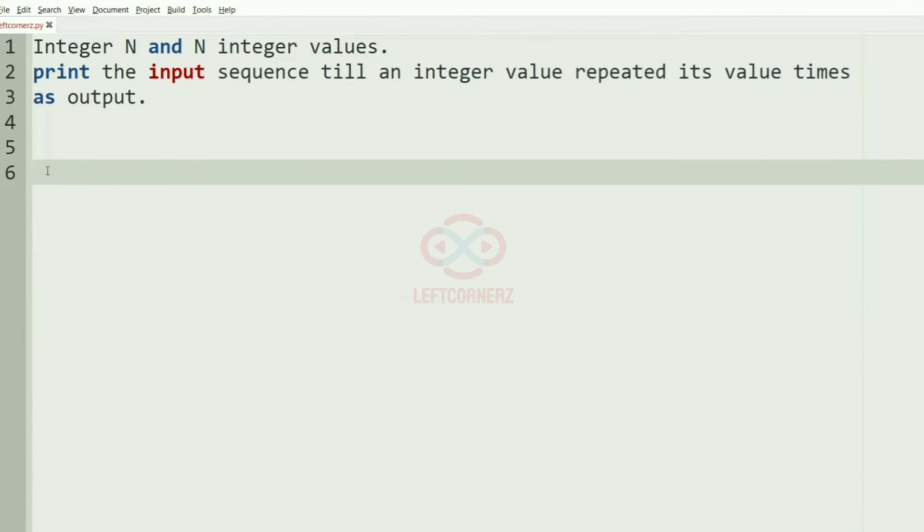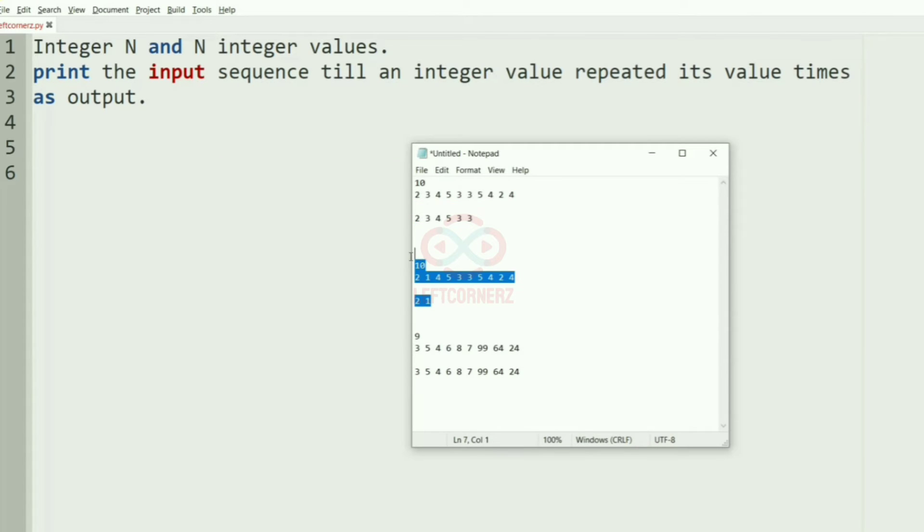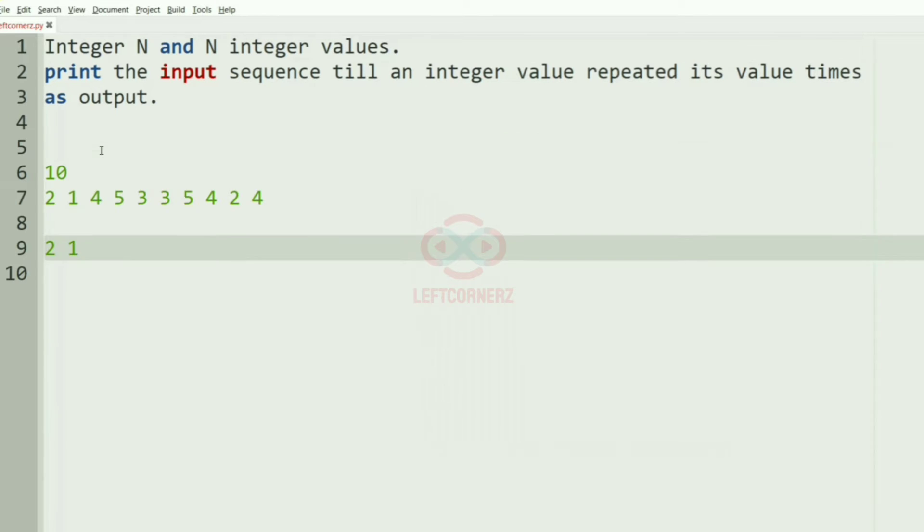So we'll take our another test case. So in this test case we have 10 integer values. So first we have 2. And then we have 1. So 1 is occurring for once. So we'll stop here. And this will be our output.